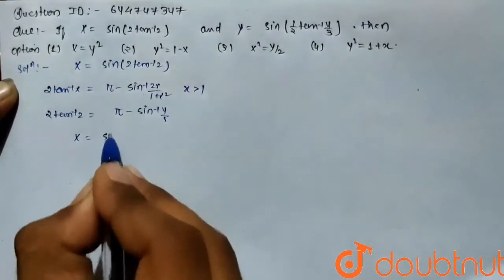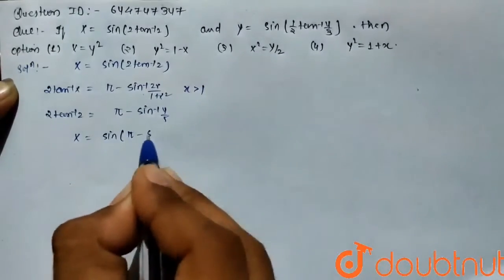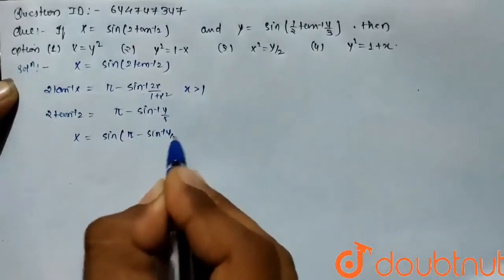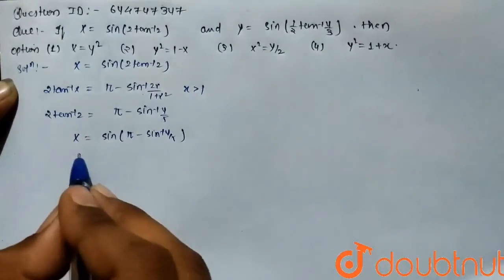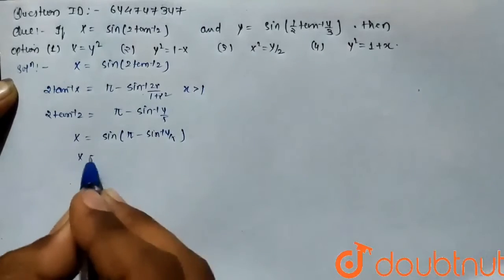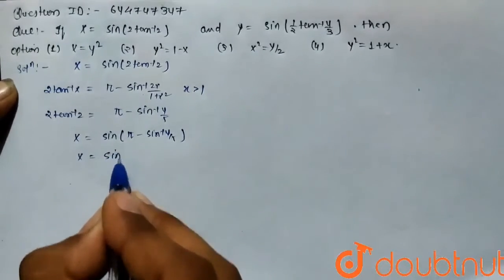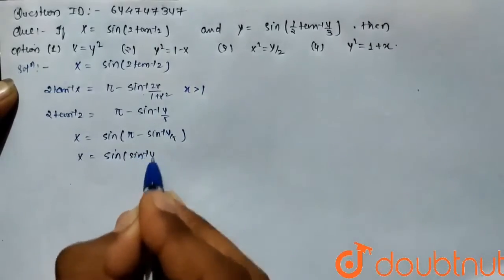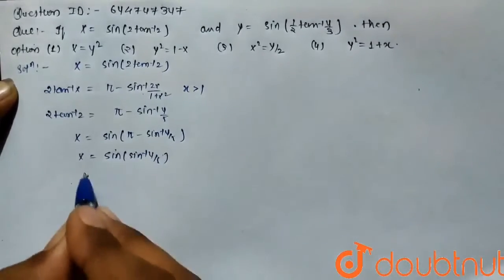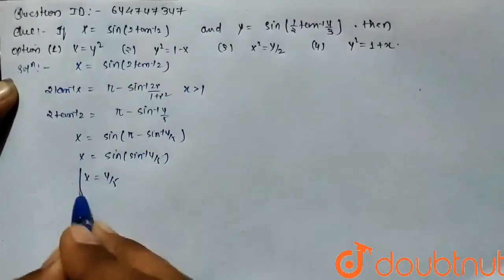Here the value of x equals sin of pi minus sin inverse of 4 by 5. Here sin 180 minus theta equals sin theta, so sin of sin inverse of 4 by 5, and the value of x equals 4 by 5.